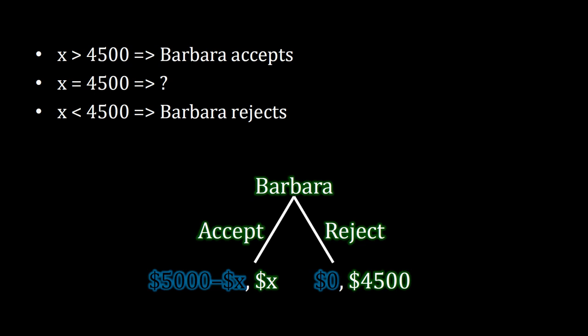Similarly, if X is less than $4,500, then if Barbara rejects she keeps the vehicle worth $4,500 to herself — which is better than accepting cash less than $4,500. So: if X is greater than $4,500, the offer exceeds the amount Barbara values the car at, so she accepts. If X is less than $4,500, that's not enough — it's less than what she values the vehicle at — so she rejects.